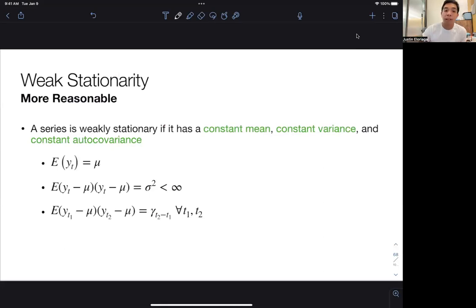So how do we define weak stationarity? Well, a series is considered to be weakly stationary if that series has a constant mean, a constant variance, and a constant autocovariance. So when we say a constant mean, the mean does not change. When we say this constant variance, the variance does not change. It's constant throughout time.